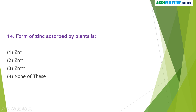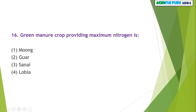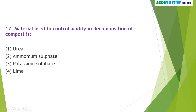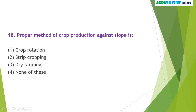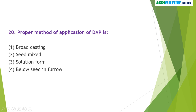The form of zinc absorbed by plants is Zn²⁺. The symbiotic bacteria among the following is Rhizobium. The green manure crop providing maximum nitrogen is Sanai. The material used to control acidity in decomposition of compost is lime. The proper method of crop production against slope is strip cropping.